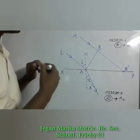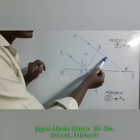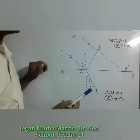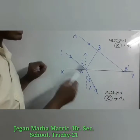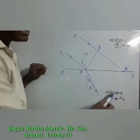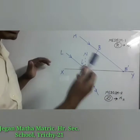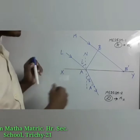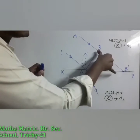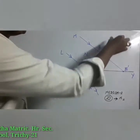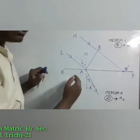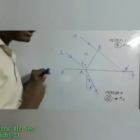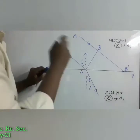Can you understand why? Because to cover the distance BB', light is traveling in the air medium. But to complete the distance AA', light is traveling in medium 2, that is the denser medium. We know that in the denser medium the speed of light is reduced. So in the given time, light covers more distance in the rarer medium and less distance in the denser medium. That's why BB' is greater than AA'.